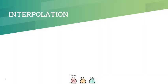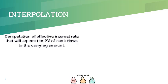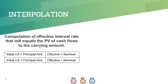Subsequently, a loan receivable is measured at amortized cost using the effective interest method. Had there been no origination fees, our effective interest rate would simply be the nominal interest rate. But because we do have origination fees, we now have to compute for the effective interest rate that will equate the present value of the cash flows to the initial carrying amount. If the initial carrying amount is greater than the principal amount, the effective interest rate must be lower than the nominal interest rate. If the initial carrying amount is lower than the principal amount, the effective interest rate must be higher than the nominal interest rate.